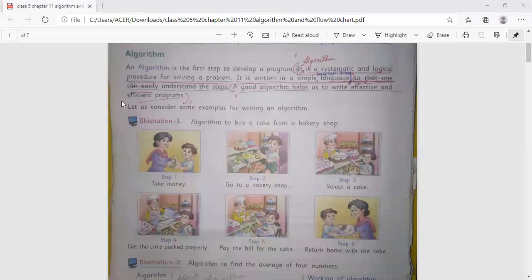A set of instructions that directs a computer to perform a specific task is known as programs or software. An algorithm is the first step to develop a program. It is a systematic and logical procedure for solving a problem. A good algorithm helps us to write effective and efficient programs.